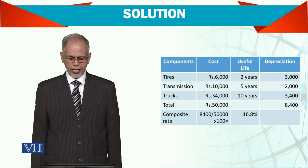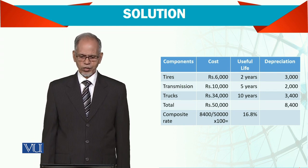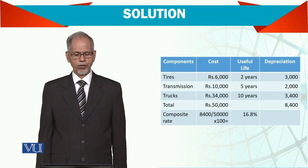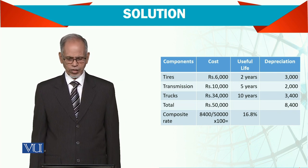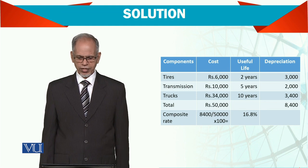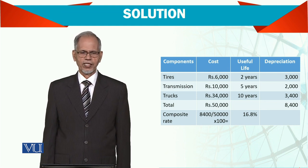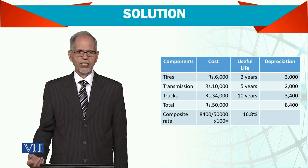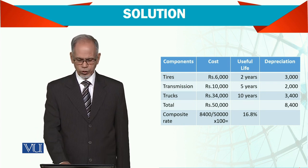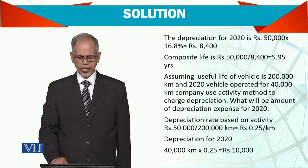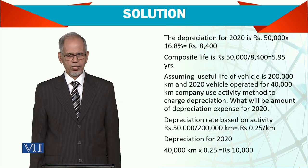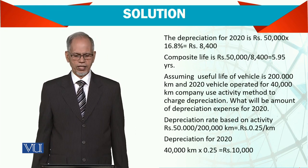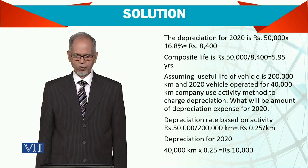The composite rate is calculated by dividing total depreciation by the cost of the assets. So, 8,400 divided by 50,000 multiplied by 100 gives a rate of 16.8%. Instead of calculating each item's depreciation separately, we use this composite rate. Depreciation for 2020, the first year, is 50,000 multiplied by 16.8%, which equals 8,400.